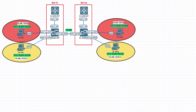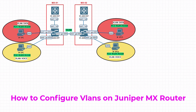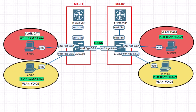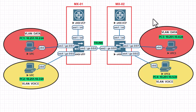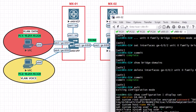Hello YouTube and welcome to another networking tutorial. In this video I'm going to show you how to configure VLANs and trunk ports on the Juniper MX routers. I have a simple topology which consists of four PCs and two Juniper MX routers. The goal is to configure VLANs on MX01 and MX02, including a trunk port.